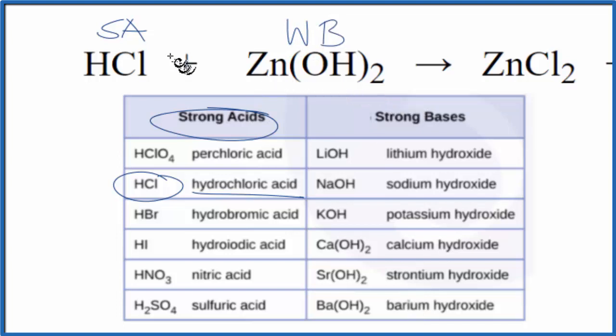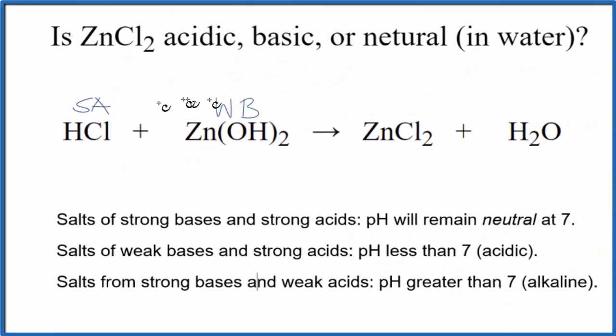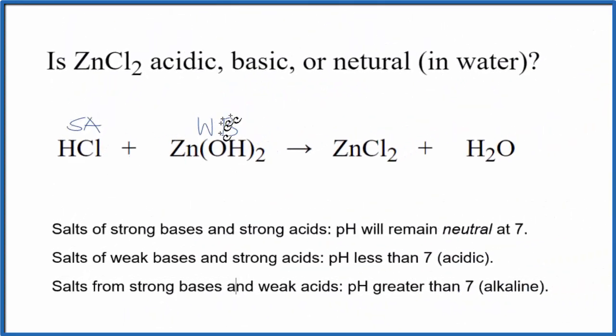So now we know the strength of the acid and the base, we can use our rules. So we have a strong acid and a weak base. Here's a weak base and a strong acid. And it says the pH will be less than 7. So this is going to be acidic.